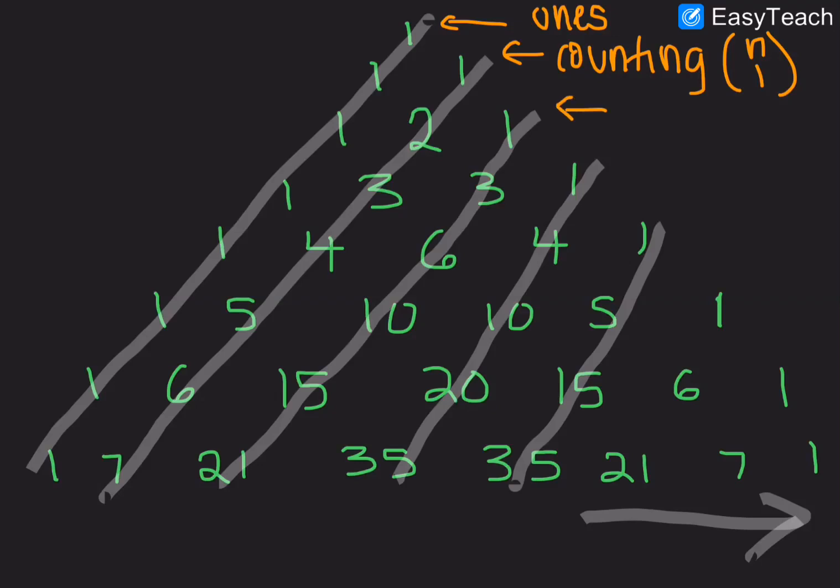You can say that this row, which is the triangular numbers, are n plus 1, choose 2. So, okay, you can say that the tetrahedral numbers are actually n plus 2, choose 3.